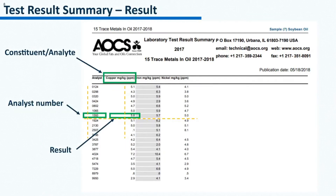The next thing to do is to find your submitted results in the report. Go down the first column on the left to locate your analyst number, and then go across to find your submitted results. Each constituent is assigned one column. To sum it up, in this first part of the report, test results are listed.